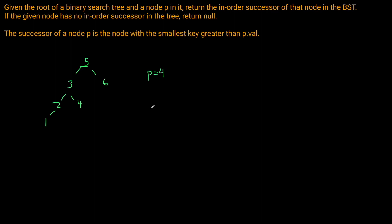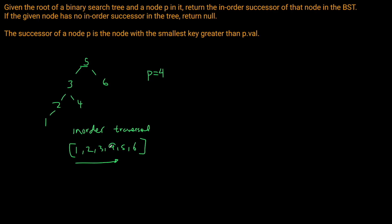An immediate naive solution is to perform an in-order traversal of the binary tree. For a BST, an in-order traversal returns nodes in sorted order — for example, 1, 2, 3, 4, 5, 6. We store these in an array, traverse it to find node p, and the in-order successor is simply the element at the next index. If the node is last in the array, we return None; otherwise it's the next element.